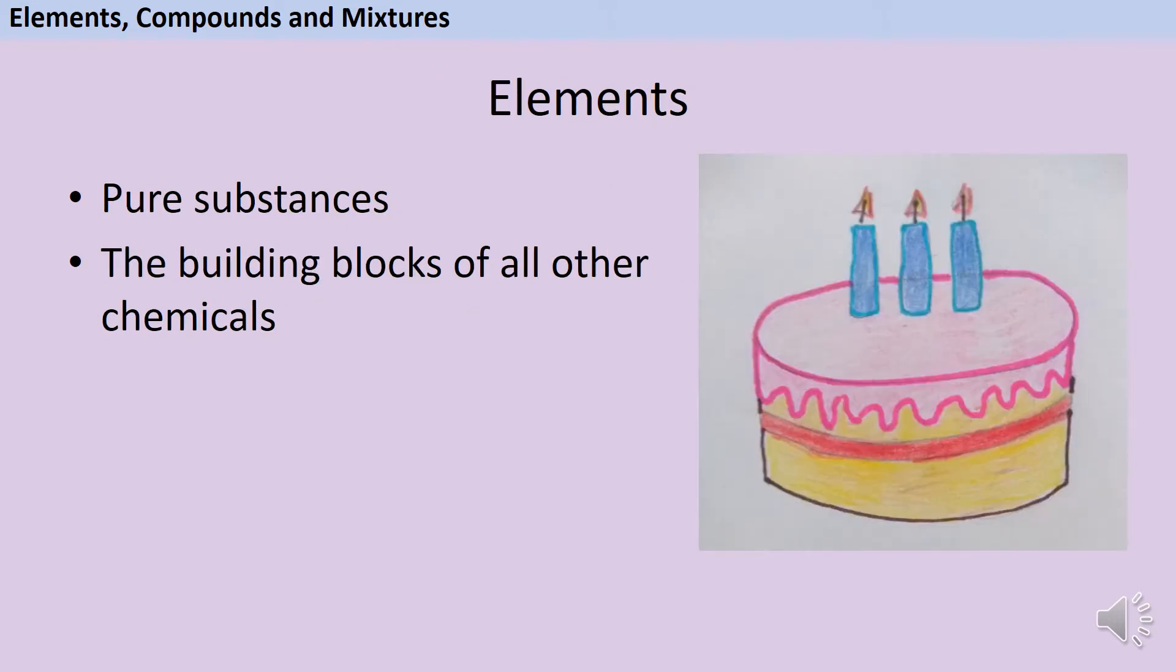In chemistry, elements are pure substances which can be used as ingredients to make all of the millions of other chemicals that there are in the world. Even though there are only about 100 elements, they can be combined in various different ways to make compounds.